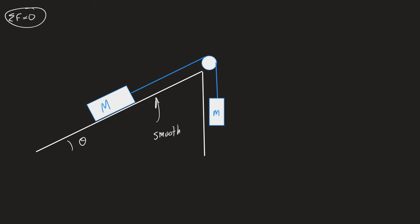You still have to do all of the force analysis, but now you have to do it for two different objects. I'll start with the hanging object. It's experiencing two forces: weight downwards and tension upwards. They're balanced. I still think it's best to get into the habit of picking a common direction for positive.